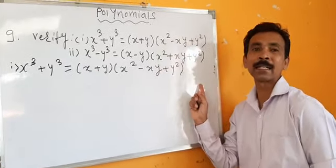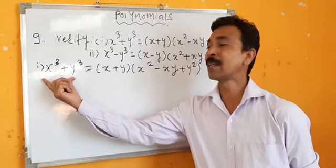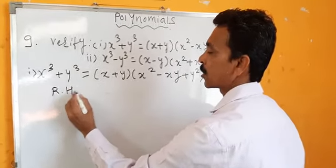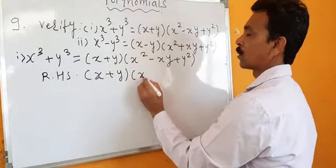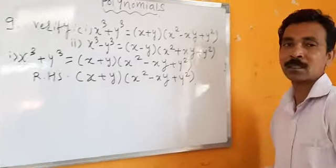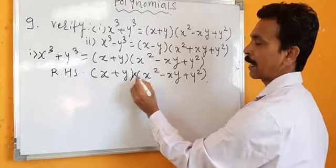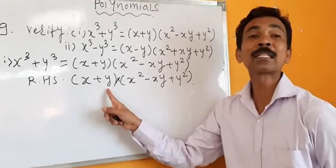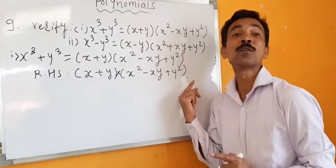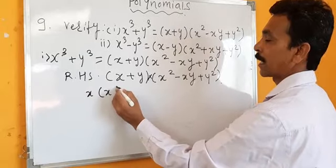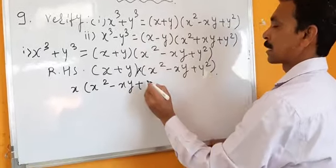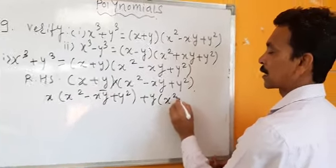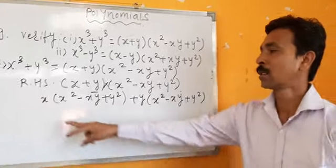Taking RHS: (x + y) into (x squared minus xy plus y squared). If there is no sign between two brackets it means multiplication. Multiply the first term of the first bracket into the full second bracket, then multiply the second part into the full second bracket. So: x into (x squared minus xy plus y squared), plus y into (x squared minus xy plus y squared).